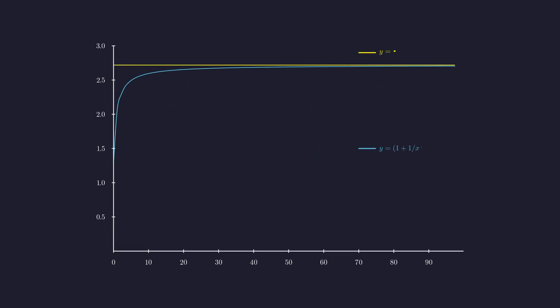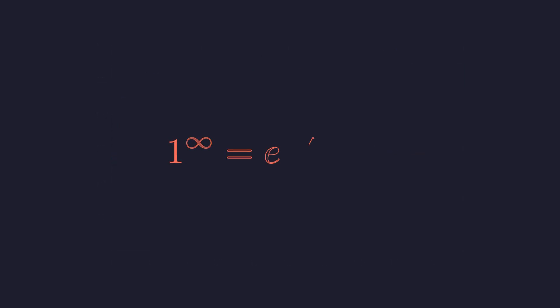Let's visualize this. We'll plot the function as x gets larger and larger. The blue curve represents our function. Notice how it climbs, getting closer and closer to this yellow dashed line as x increases. That yellow line is the value of e, Euler's number. The function approaches it asymptotically. So this specific case of 1 to the power of infinity actually equals e. Not 1, e. Our intuition was wrong.